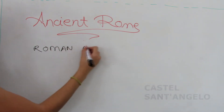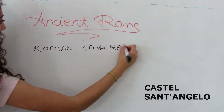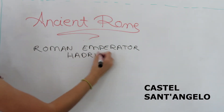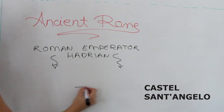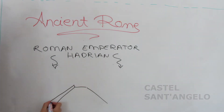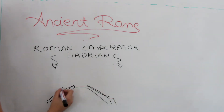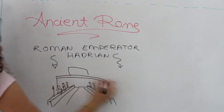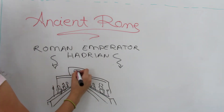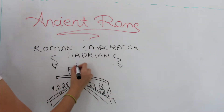The Castel Sant'Angelo is a towering cylindrical building in Rome. It was initially commissioned by the Roman Emperor Hadrian as a mausoleum for himself and his family. The building was later used by the Popes as a fortress and castle, and is now a museum.